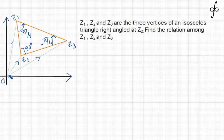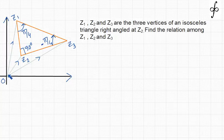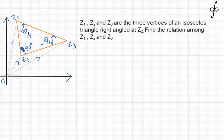I have already drawn the diagram — this is the real axis, this is the imaginary axis, this is the origin, and the three vertices of the triangle are Z1, Z2, and Z3. These are the three vertices of the right-angled isosceles triangle with the right angle at vertex Z2, so this angle is 90°. Since it is an isosceles triangle, the two equal side lengths mean the other two angles are each 45°.